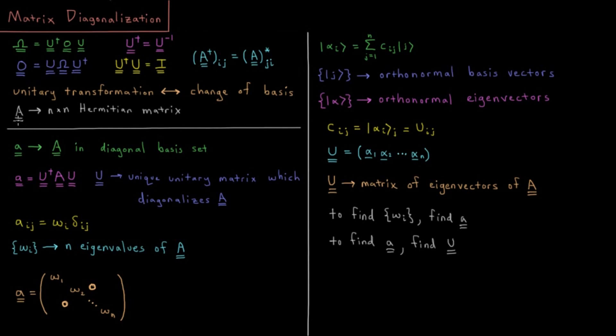And typically what we're going to be talking about here is some Hermitian matrix which is square and n by n, so it's an n-dimensional Hermitian matrix.